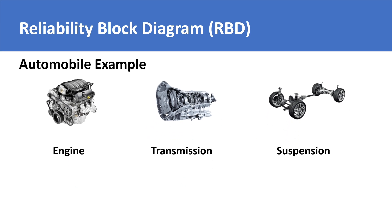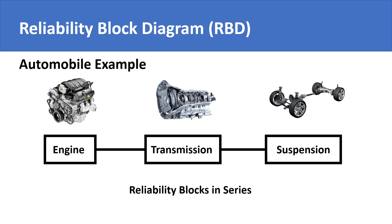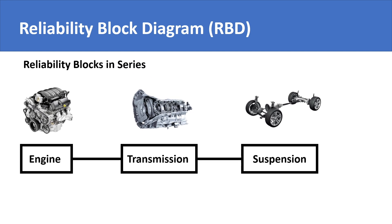This is the concept of parts in series. It is important to highlight that when we say series, we are not referring to how the parts are physically connected with each other. We are saying series connection from the perspective of how their reliability is combining. In series reliability, you get the resultant reliability by multiplying the reliability of all parts. So if the engine has a reliability of 95%, transmission has a reliability of 90%, and suspension has a reliability of 88%, the resultant reliability will simply be the product of these three, giving us a resultant reliability of 75.24%.